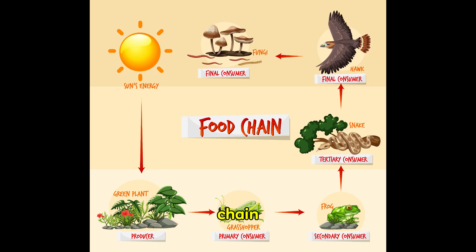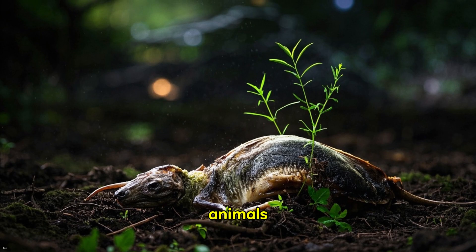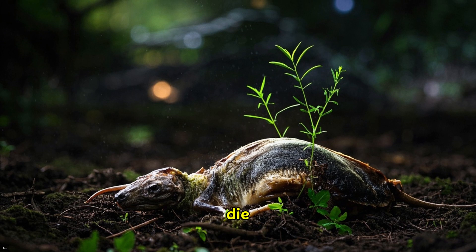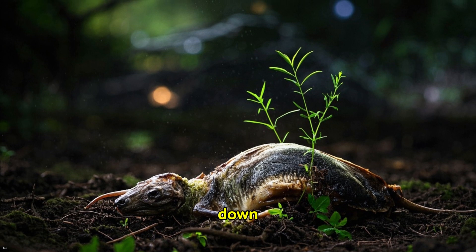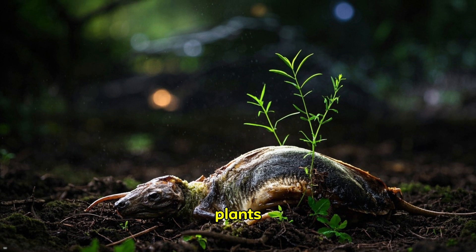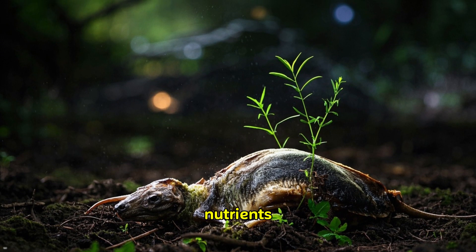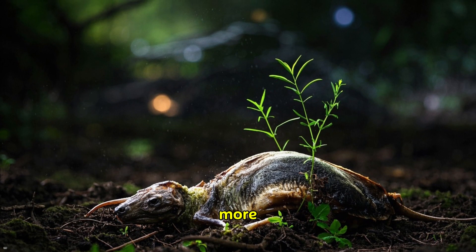And that's how the food chain works. Plants make their own food. Animals eat the plants or other animals. And when those animals die, decomposers break them down so that the plants can use those nutrients to make even more food.